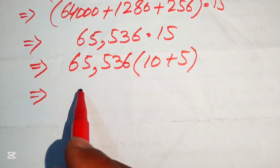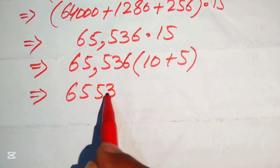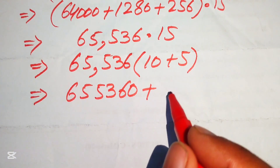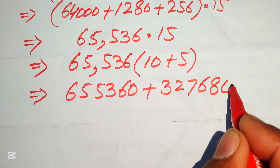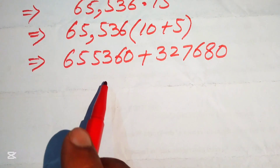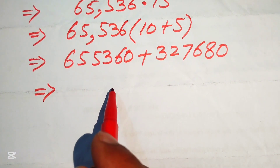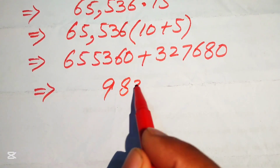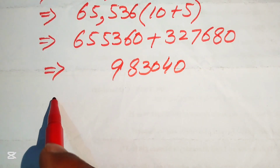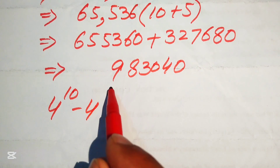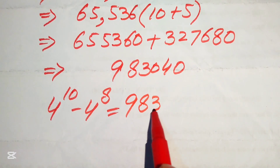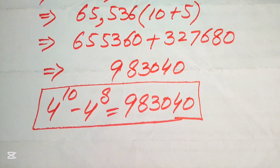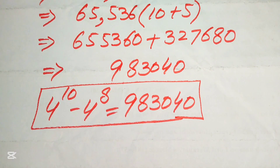Multiplying 65,536 by 5 gives 327,680. Summing these two results: 655,360 plus 327,680 equals 983,040. So the final answer is 4 to the power of 10 minus 4 to the power of 8 equals 983,040. Thank you so much for watching this video — please subscribe to my channel for more exciting videos.